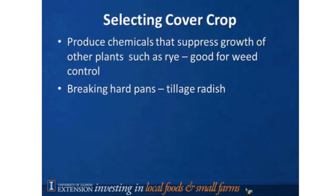Question: How does cereal rye help get rid of weeds without hurting the crop you're planting? Answer: The herbicide compounds are in low enough concentration that they work on very small seedlings. In the case of squash and tomatoes, we are putting transplants into the field — plants already at the 3, 4, or 5 leaf stage. The concentration is sufficient to kill seedlings just starting to emerge, but does not harm the larger transplants.